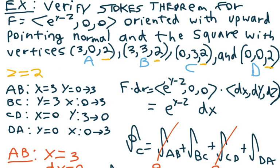So over here, they are asking us to verify Stokes' theorem for f equals e to the y minus z as an x component, 0 and 0 for the y and z components of this vector. And it's oriented with an upward pointing normal and the square with vertices (3,0,2), (3,3,2), (0,3,2), and (0,0,2).